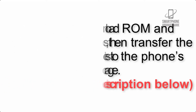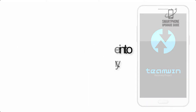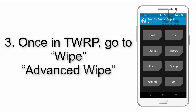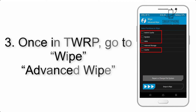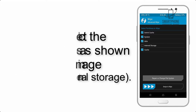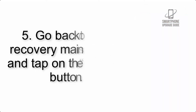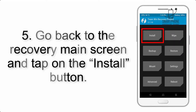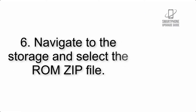The download link is in the description below. Step 3: boot your device into TWRP recovery. Once in TWRP, click on Wipe, then Advanced Wipe, and select the checkboxes as shown in the image, excluding internal storage. Step 4: swipe the button to wipe the device.